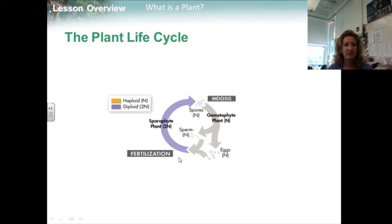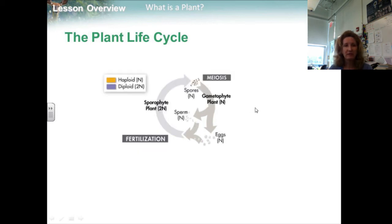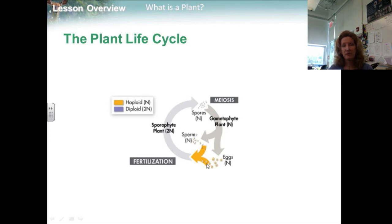The multicellular diploid phase is known as a sporophyte, or spore-producing plant. They produce spores. The multicellular haploid phase is known as the gametophyte, or gamete-producing plant. Sporophytes produce haploid spores through meiosis.